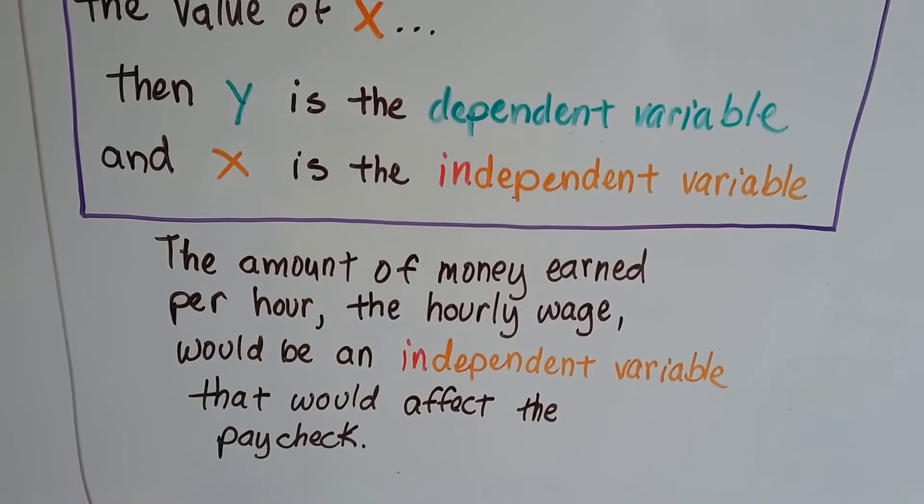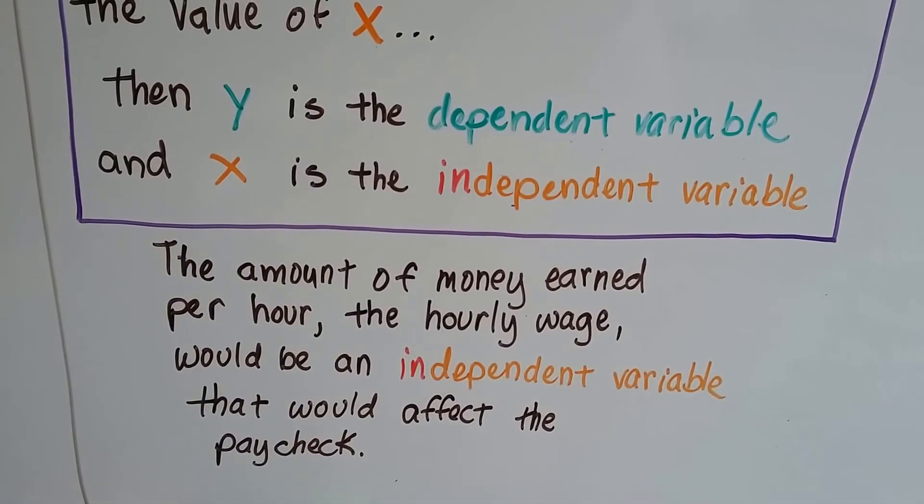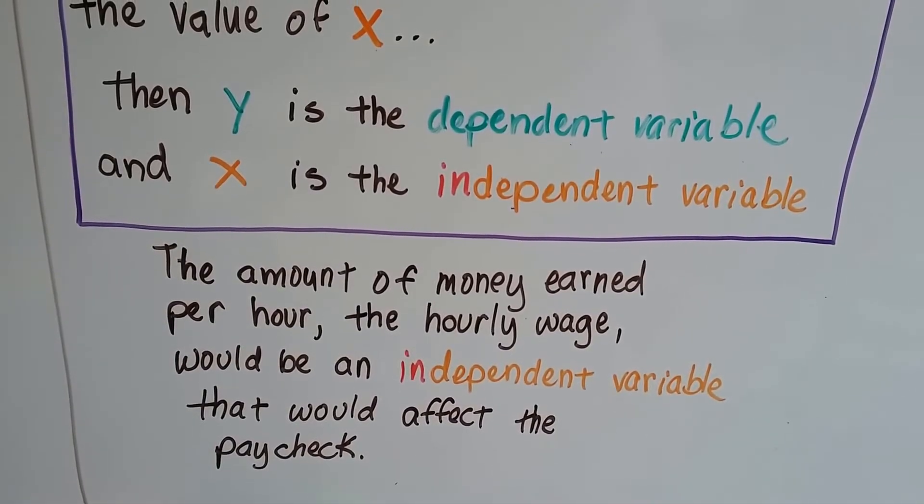The amount of money earned per hour, the hourly wage, would be an independent variable. That would affect a paycheck.